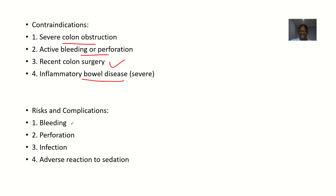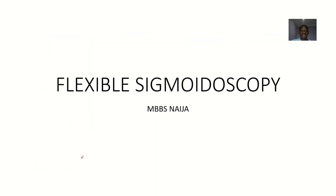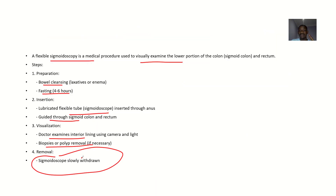Risks and complications: since you are penetrating someone, risks include bleeding, perforation, and infection if the instrument is not sterile. There can also be adverse reactions to sedation, since the patient is essentially put to sleep. That covers flexible sigmoidoscopy.